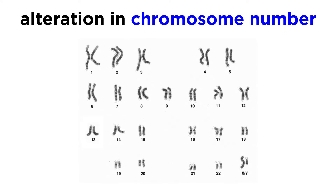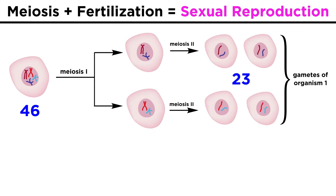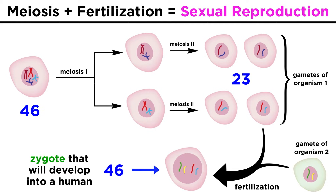The first thing we want to examine is alteration in chromosome number. We take it for granted that all of our somatic cells have 46 chromosomes, which through meiosis produce gametes with 23 chromosomes, so that fertilization produces a zygote with 46 chromosomes once again, which grows into a new person. But there are instances where these numbers can change.